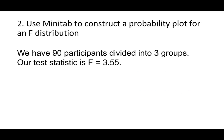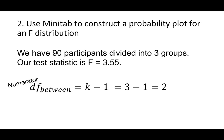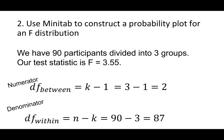We'll walk through one example. We have 90 participants divided into three groups. Our test statistic is F equals 3.55. First, we need to compute our degrees of freedom. Degrees of freedom between groups, which Minitab Express calls the numerator degrees of freedom, is k minus 1, where k is the number of groups. We have three groups, so 3 minus 1 gives us 2 between-groups degrees of freedom. Degrees of freedom within groups is n minus k: with a total sample size of 90 and 3 groups, there are 87 within-groups degrees of freedom.